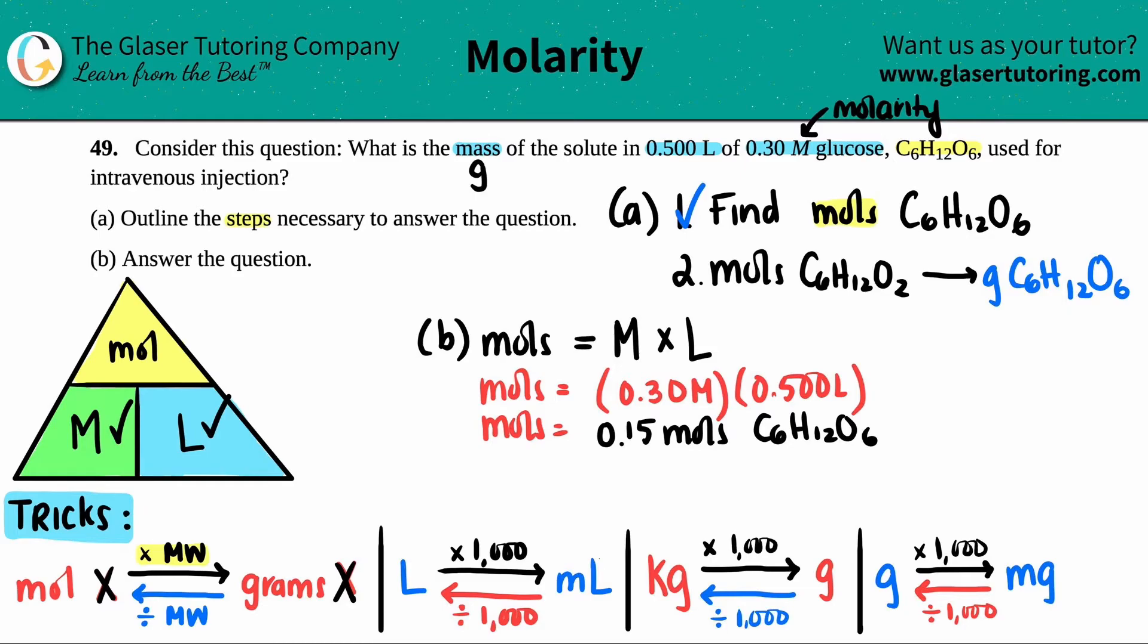Now we have to convert moles into grams. And we just talked about that over here. We have the moles, we want to get to grams. So I just take my number, in this case, it's 0.15 and times it by the molecular weight. So I'm going to do 0.15 moles of C6H12O6, but they didn't tell me what the molecular weight was. So we have to find it.